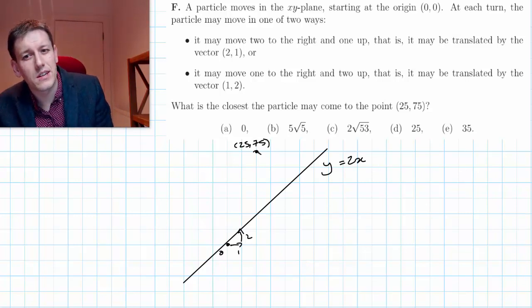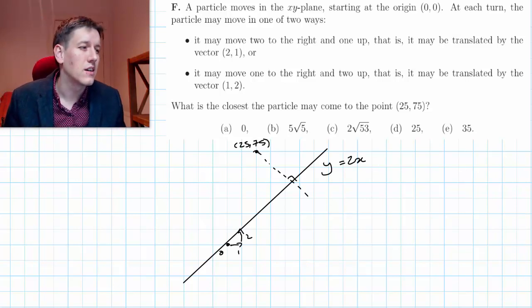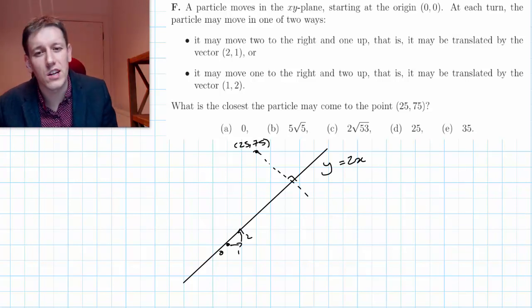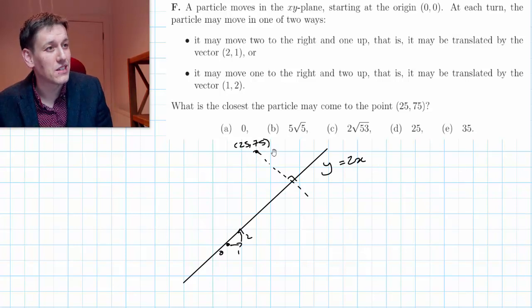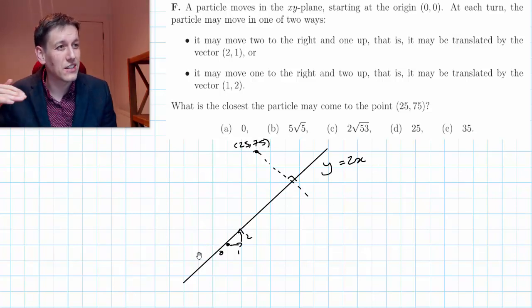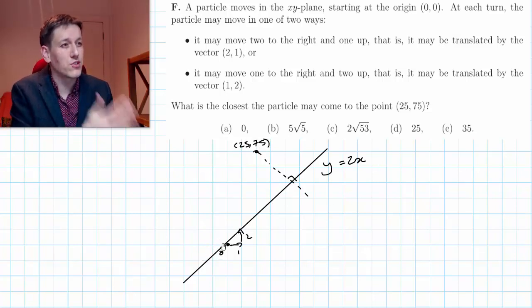So if I'm lucky the closest point is just going to be a point on the line y equals 2x perpendicular. If I can find the closest point on the line y equals 2x to this point (25, 75).